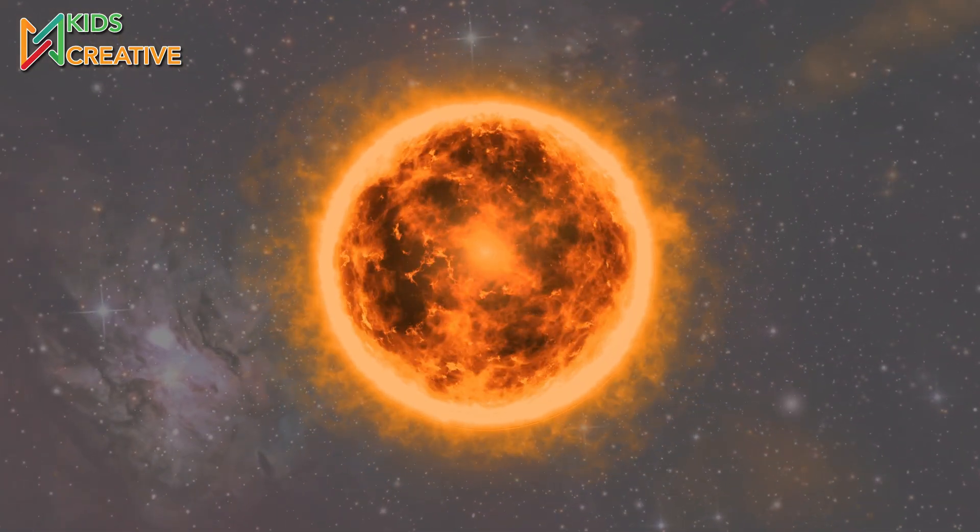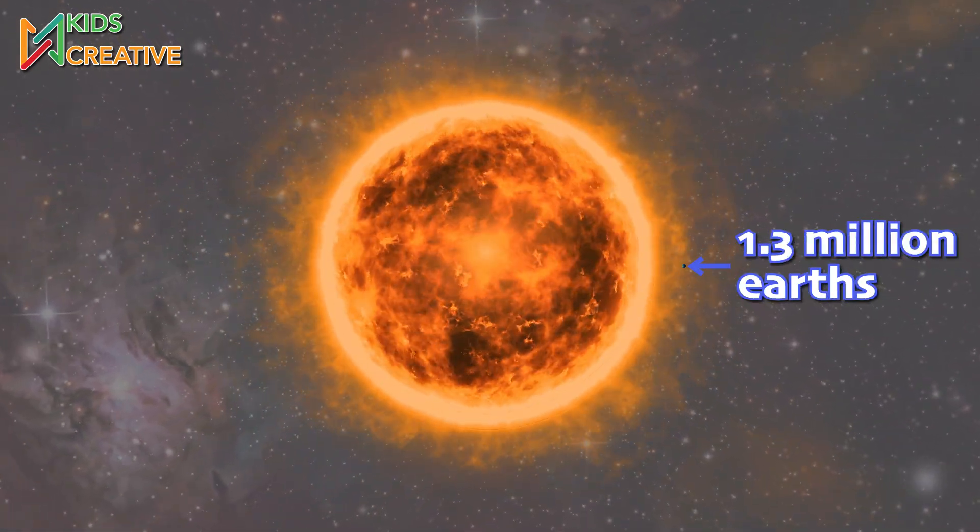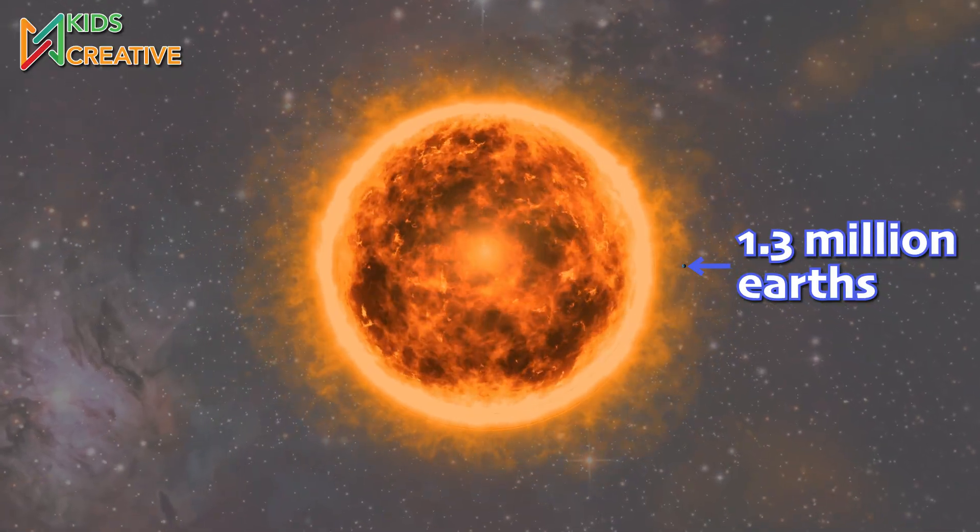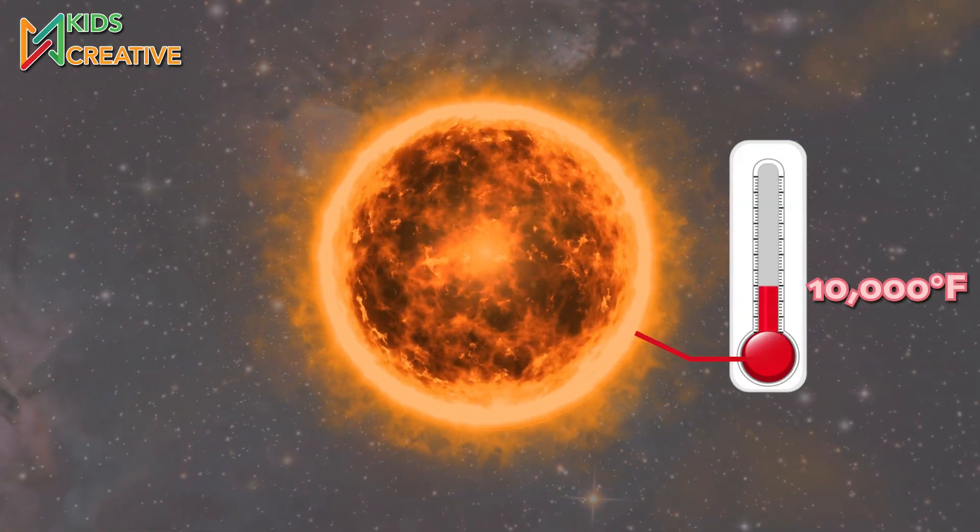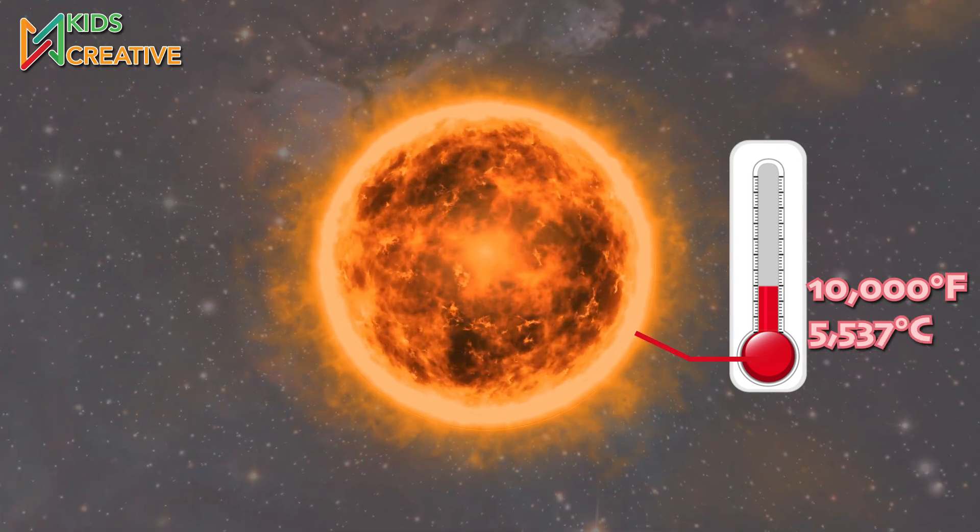The Sun is so big, 1.3 million Earths could fit inside it. Its surface is 10,000 degrees Fahrenheit, or 5,537 degrees Celsius, while its core is 27 million degrees Fahrenheit, or 15 million degrees Celsius.